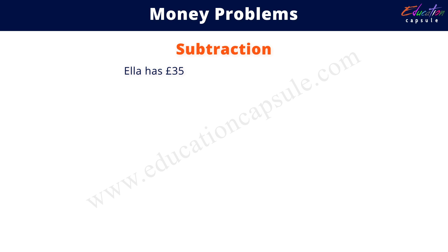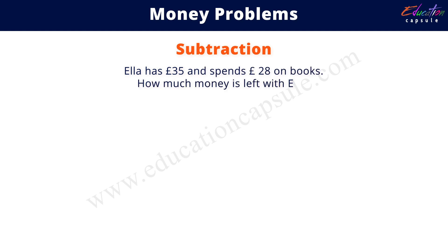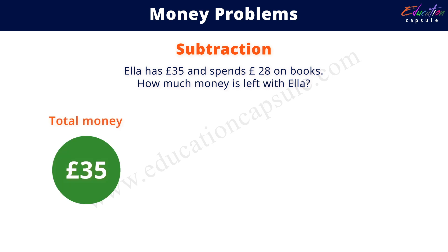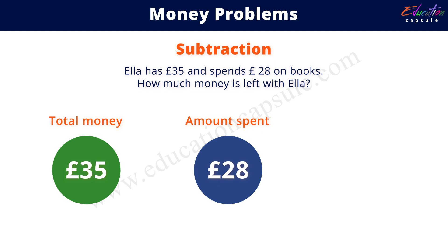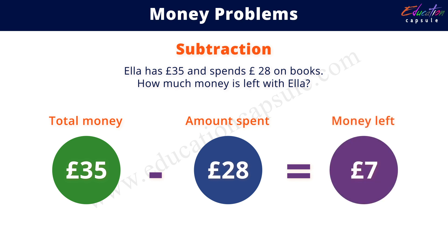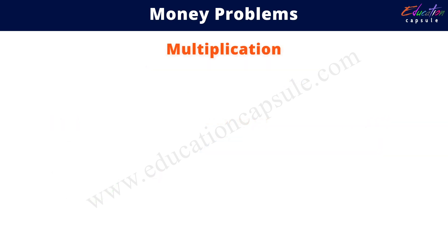Next is subtraction. Ella has 35 pounds and spends 28 pounds on books — how much money is left with Ella? The amount with Ella is 35 pounds and she spent 28 pounds on books. The keyword 'how much is left' tells us to use subtraction, so the amount left is 35 pounds minus 28 pounds, which equals 7 pounds.